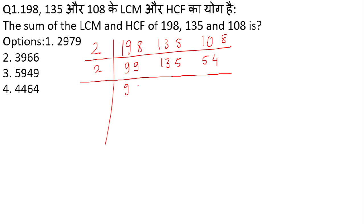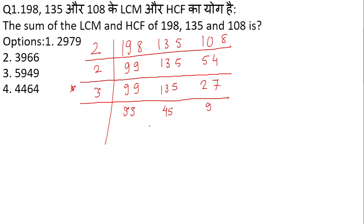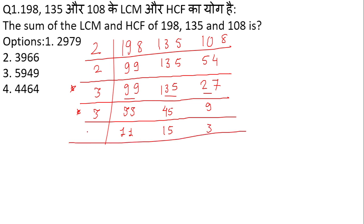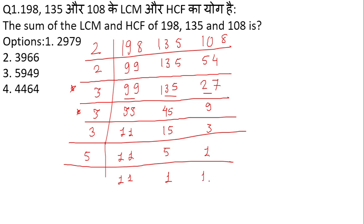After dividing by 2 twice, we get 99, 135, and 27. All three numbers are divisible by 3 — that is, 3 threes are 9, 3 fives are 15, and 3 nines are 27. Once again all three numbers 33, 45, and 9 are divisible by 3. These are the two steps where all three numbers are divisible by 3. This usage is in the LCM: 3 ones are 3, 3 fifteens are 45, 3 threes are 9. This gives me 11, 15, and 3.